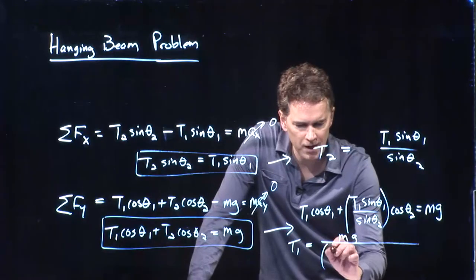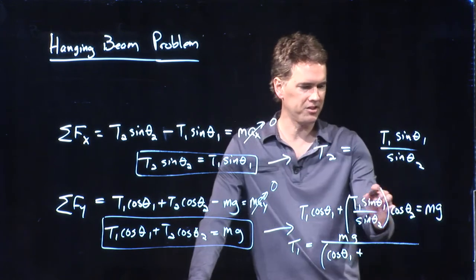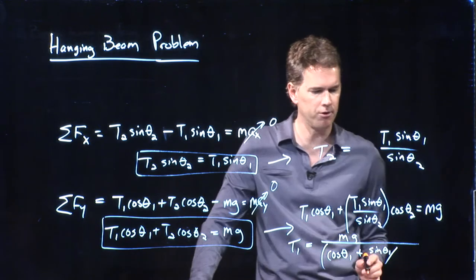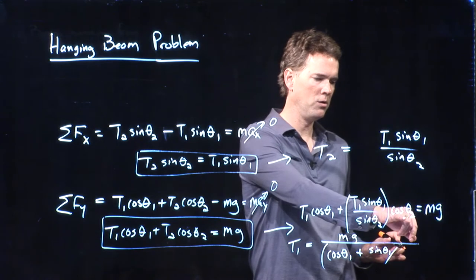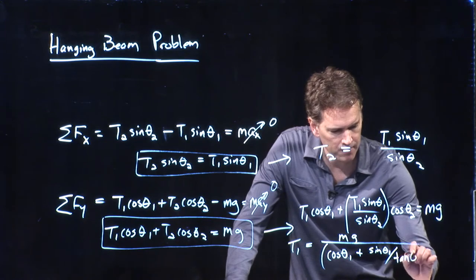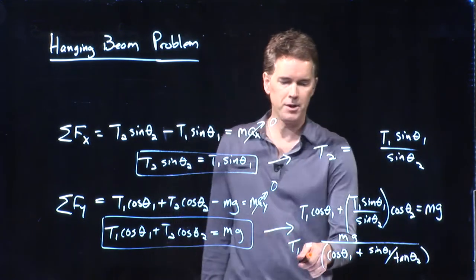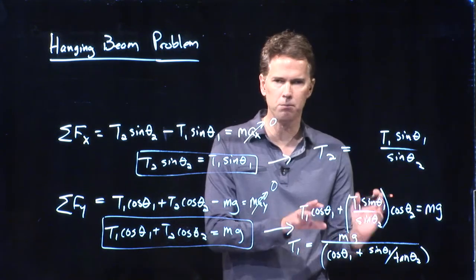The y-direction equation becomes: T1 cosine theta-1 plus (T1 sine theta-1 divided by sine theta-2) times cosine theta-2 equals mg. Solving for T1, we get T1 equals mg divided by cosine theta-1 plus sine theta-1 over sine theta-2 times cosine theta-2 — and that last part simplifies to sine theta-1 over tangent theta-2. So now we have an equation for T1 — if we know all those angles, we can plug in real numbers.